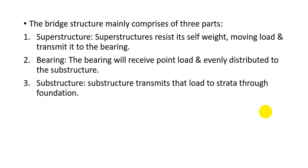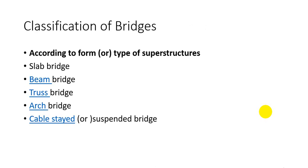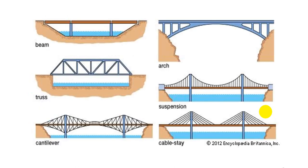Classification of bridges: mainly according to form, bridges may be classified as slab bridge, beam bridge, truss bridge, arch bridge, or cable-stayed bridge — also called a suspension bridge. You can observe here the beam bridge, arch bridge, truss bridge, suspension bridge, cantilever bridge, and cable-stayed bridge.